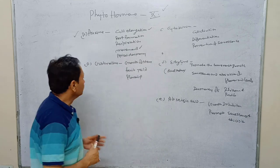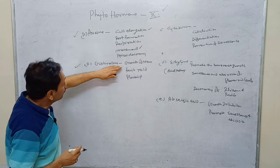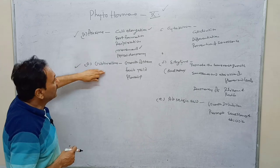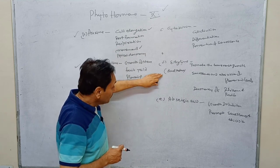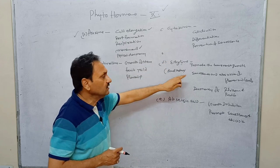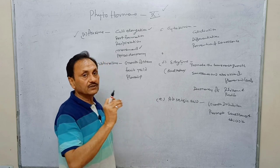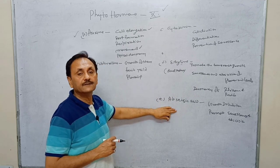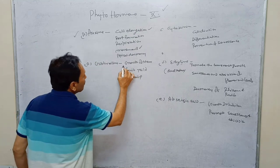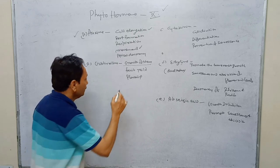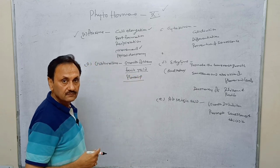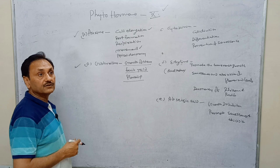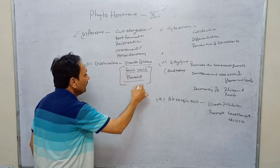The second phytohormone is gibberellin, which is also a growth promoter. There are five types of phytohormones: auxin, gibberellin, and cytokinin are all growth promoters. Ethylene is a growth promoter as well as a growth inhibitor, so it has a dual function. Gibberellin is responsible for the growth of the stem, fruit yield, and the flowering of plants. Fruit formation (not ripening) is under the control of gibberellin.